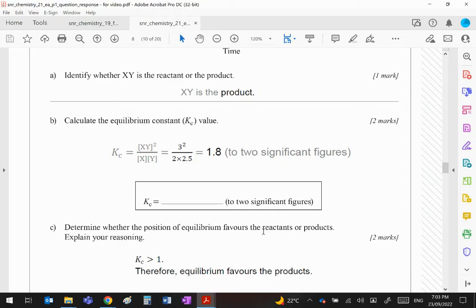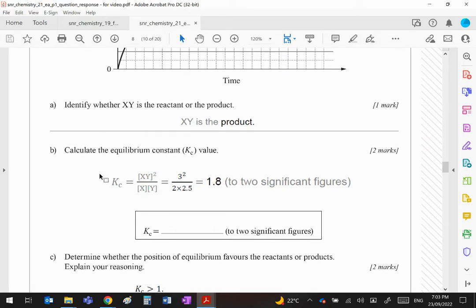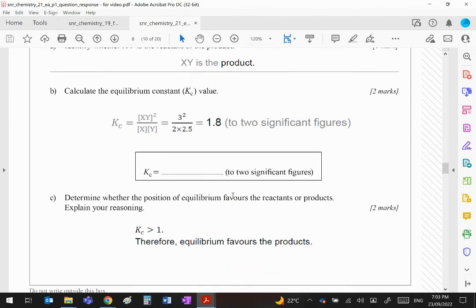Does the equilibrium favor the reactants or products? Well if K is bigger than one then clearly it's favoring products because products are on the top, reactants are on the bottom.